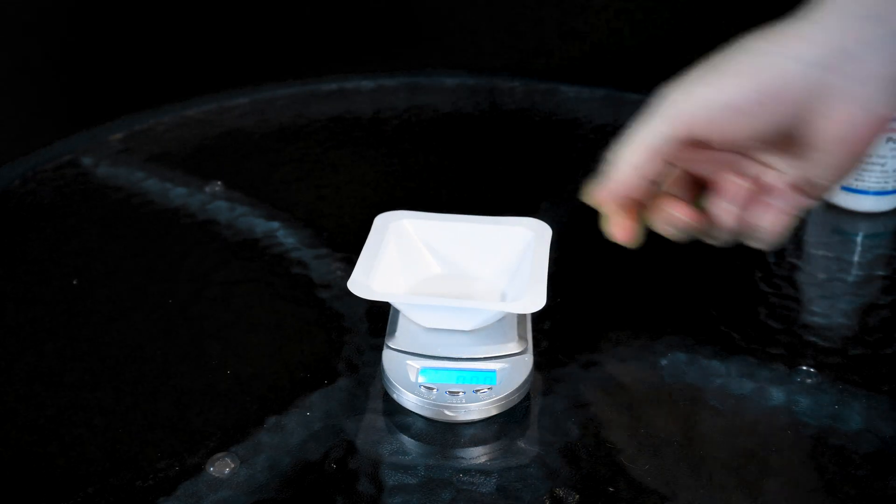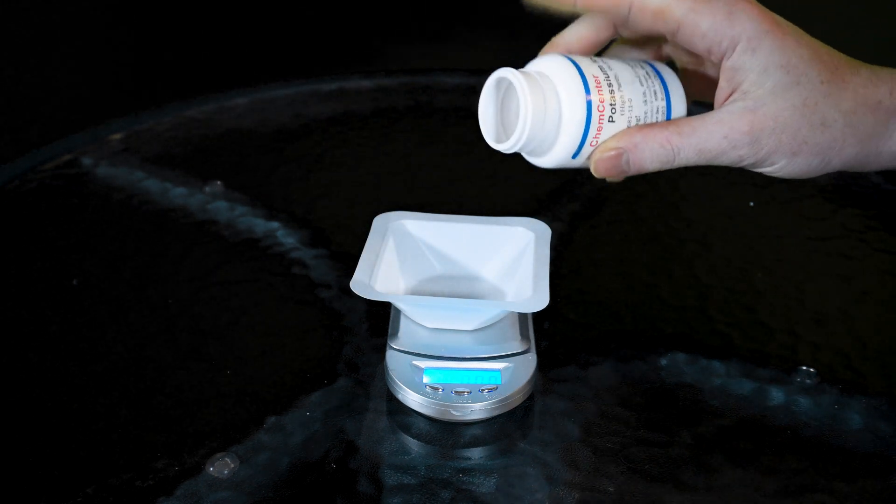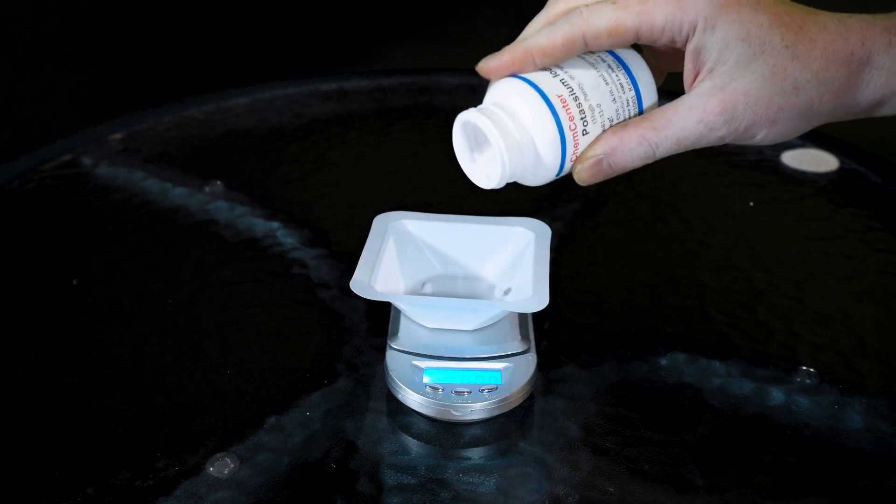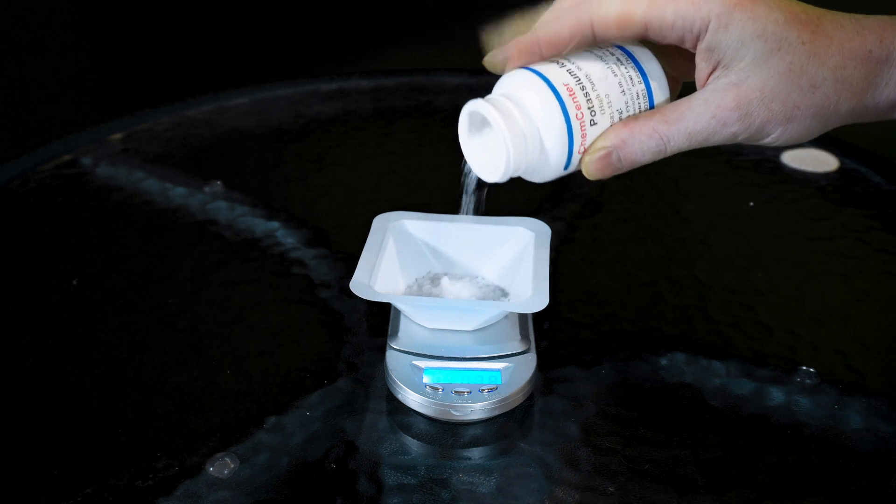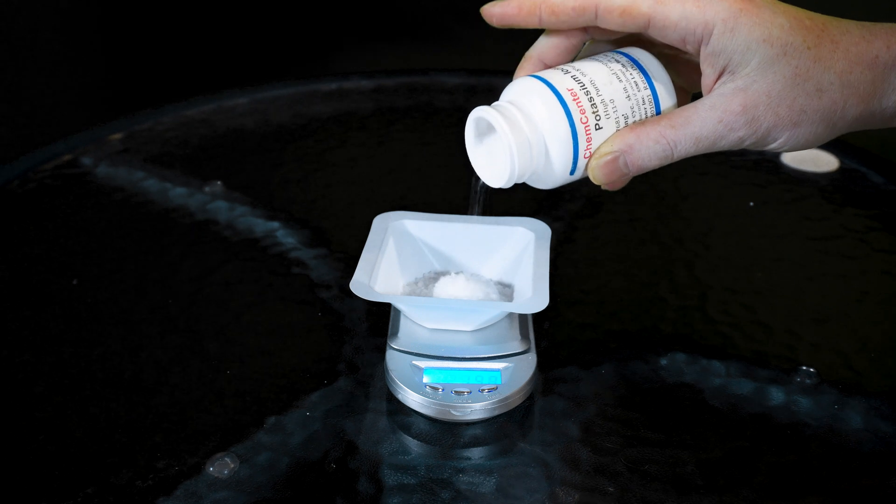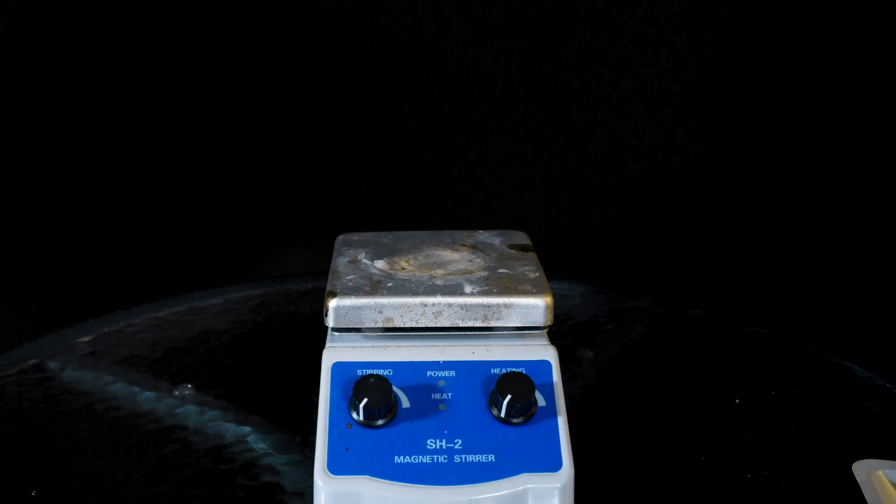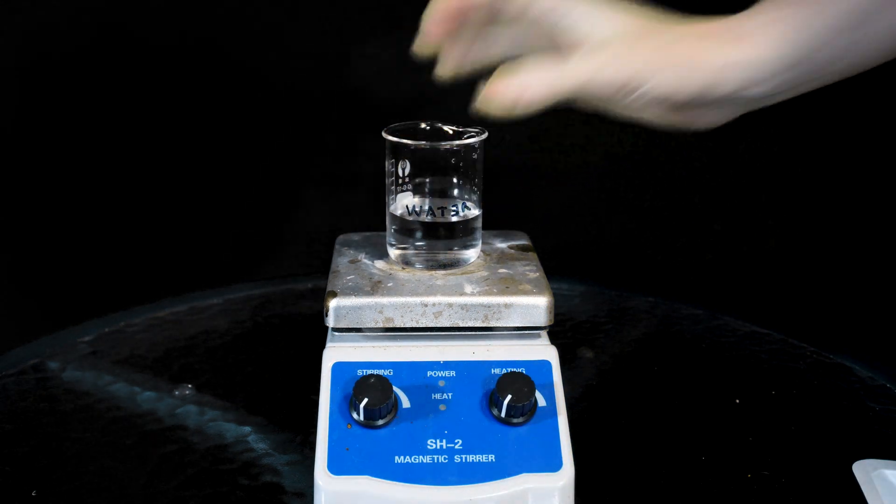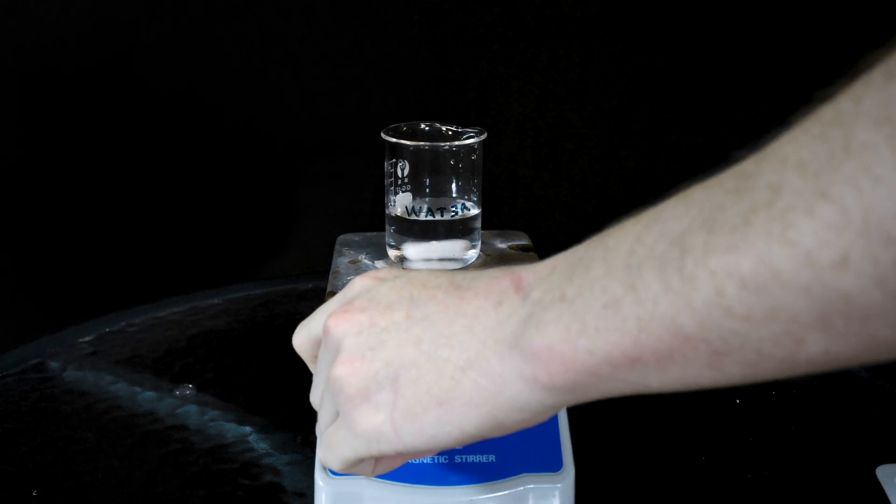We start out by weighing out about 26 to 27 grams of potassium iodide. The amount really isn't all that important, but I've found this gets me more than I'll ever need. It's dissolved in about 50 milliliters of room temp tap water. We'll use colder water later when we don't want to dissolve it as easily.